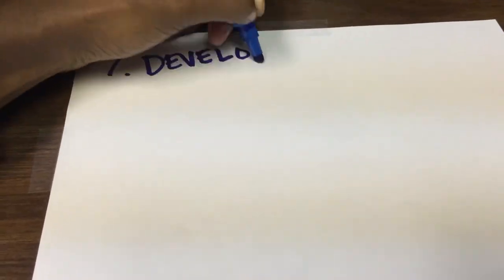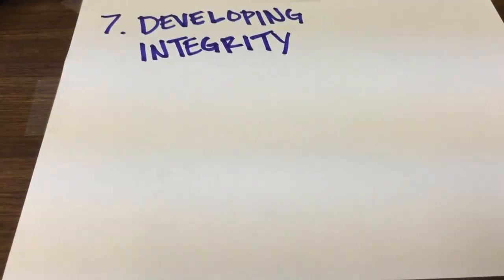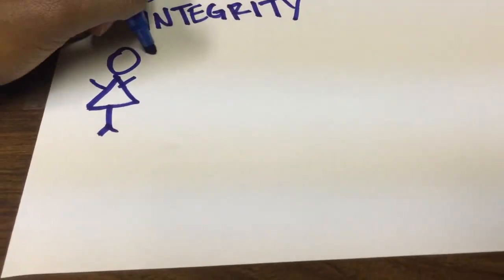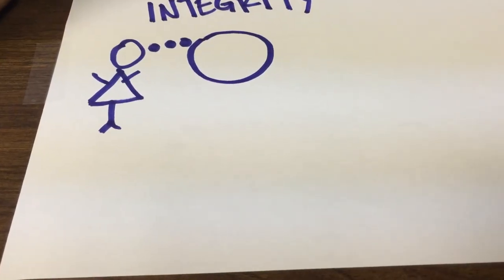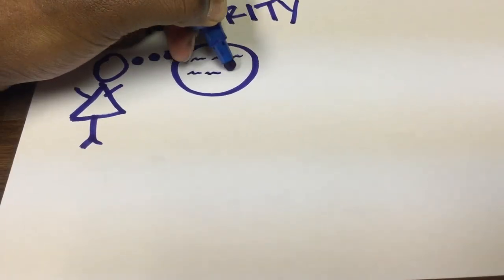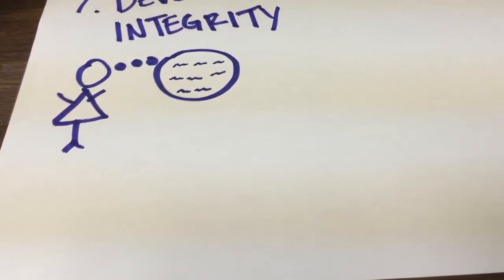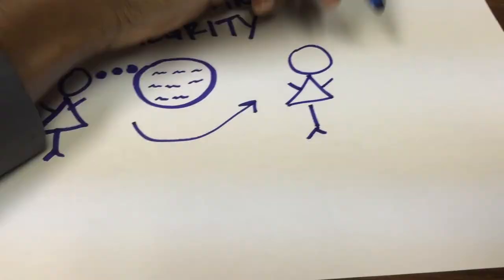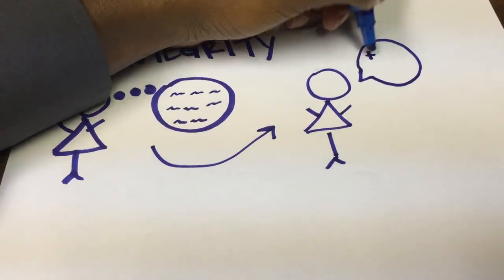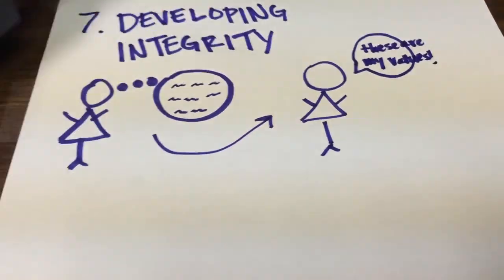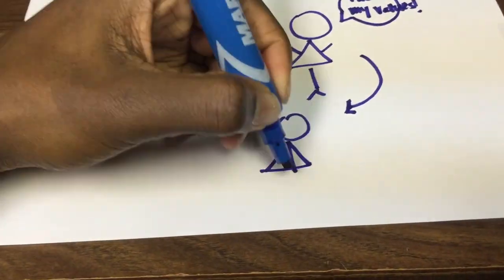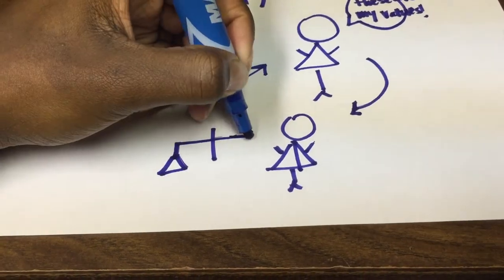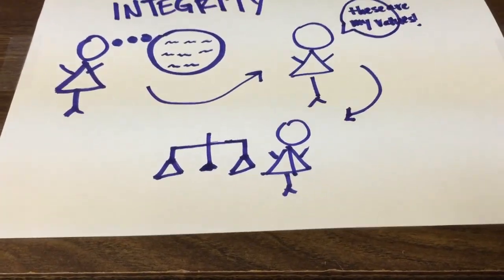The seventh vector is developing integrity. Say that we have Jessica who is currently in that process of developing her integrity. That involves humanizing her values — essentially thinking about what they are — and then with that she personalizes her values, accepting what they are. After that, she develops congruence: how she is able to balance that out in her everyday life.